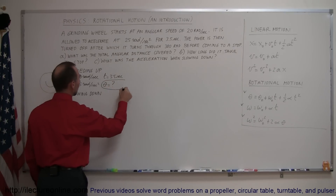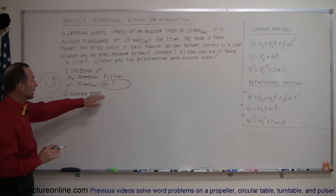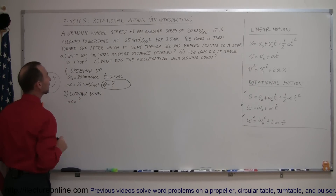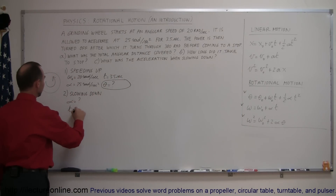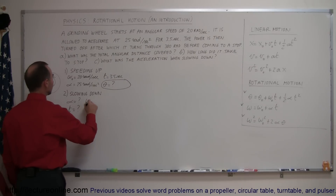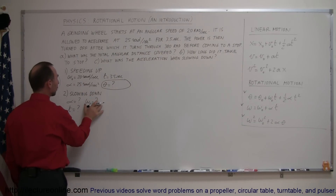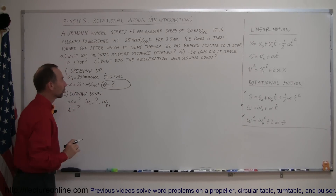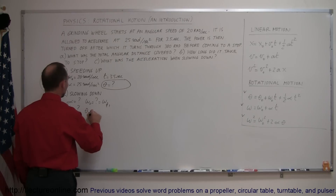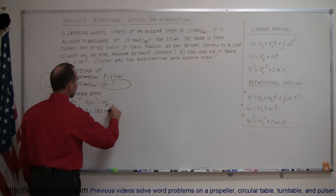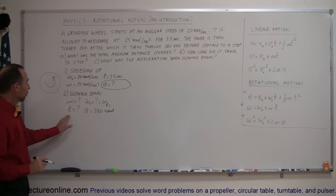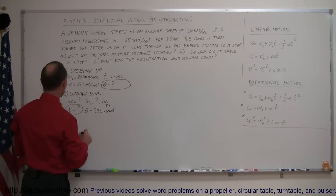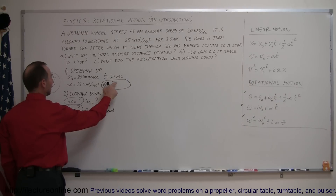For the first part of the problem we don't know the angular distance the wheel turned, so we need to figure that out. For the second part where we're slowing down, the angular acceleration is not known — that's what they're asking for in part C. The time is not known. The initial omega is not known; however, the initial omega will be the same as the final omega from part one. And theta is given: the angular distance covered is 380 radians during the slowdown period. For part B we need to find the time, and for part C, the acceleration.